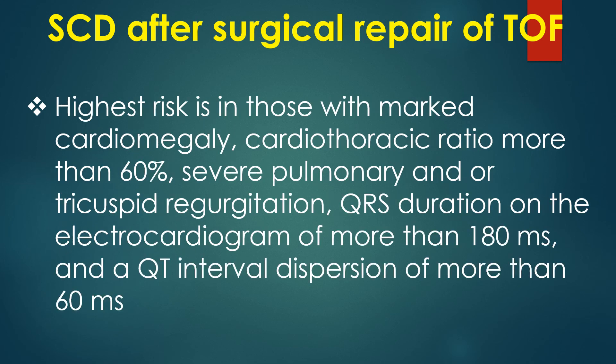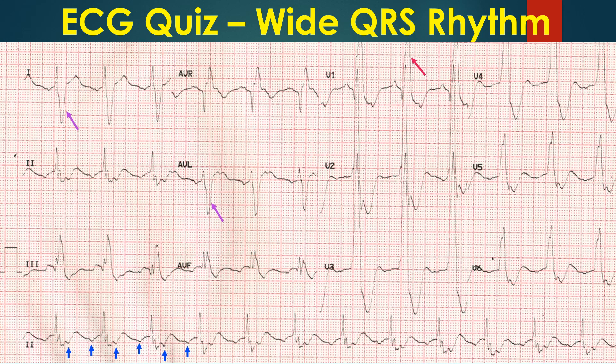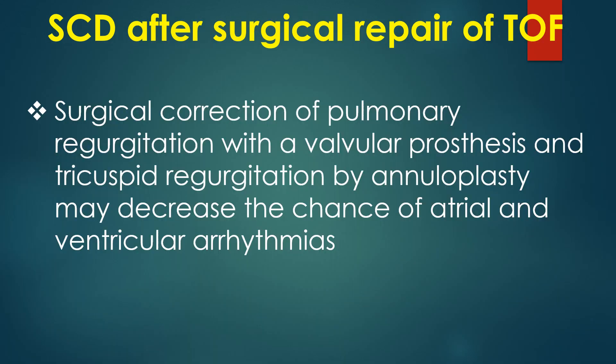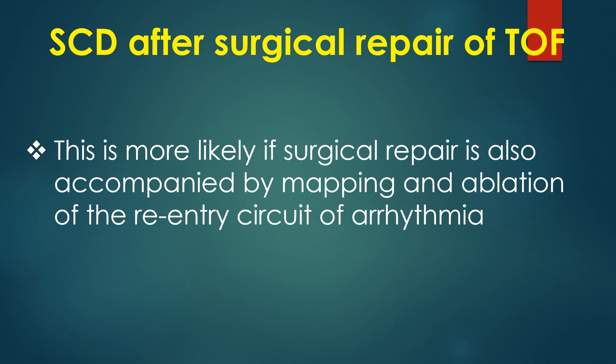Highest risk is in those with marked cardiomegaly, cardiothoracic ratio more than 60%, severe pulmonary and/or tricuspid regurgitation, QRS duration on electrocardiogram of more than 180 ms, and QT interval dispersion of more than 60 ms. In the ECG illustrated here, the QRS duration is 200 ms, placing it in the high-risk category. Surgical correction of pulmonary regurgitation with a valvular prosthesis and tricuspid regurgitation by annuloplasty may decrease the chance of atrial and ventricular arrhythmias, especially if accompanied by mapping and ablation of the re-entry circuit.